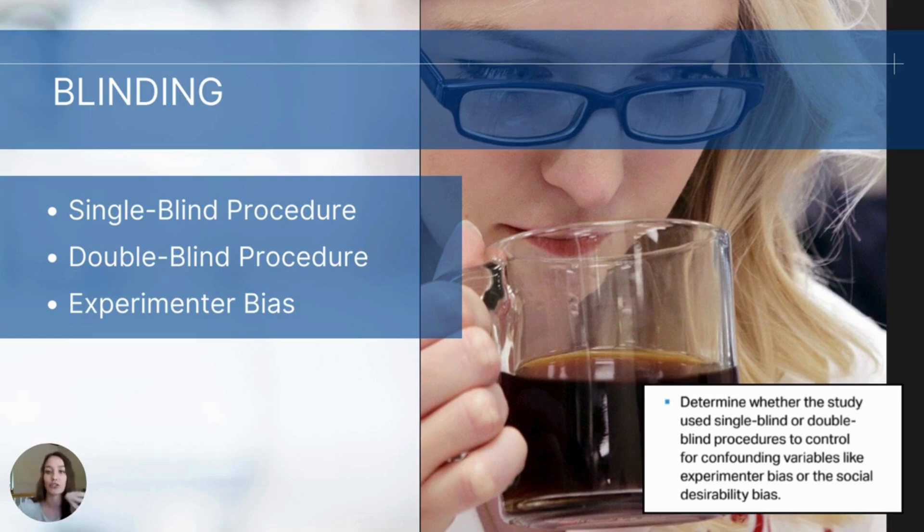Experimenter bias refers to the unintentional influence that researchers can have on the outcomes of an experiment because of their own expectations or beliefs about the study. So for example, if a researcher knows which group is receiving the placebo and which group is receiving the active substance, they one could unconsciously interpret ambiguous data in a way that supports their hypothesis or two they could give subtle cues or signals that might influence the way that the participants respond. They could also unintentionally selectively analyze their data or report their findings in a way that confirms their own expectations. So blinding helps to reduce that bias and ensure that the results are due to the treatment itself and not influenced by the expectations of the participants or the researcher.